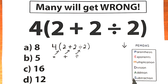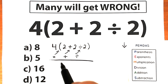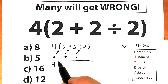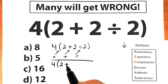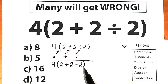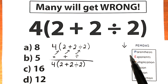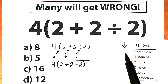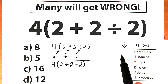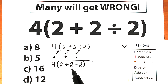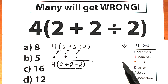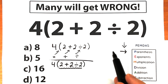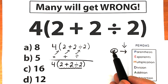Parentheses have the highest priority — we should always evaluate the expression inside parentheses first, then exponents, then multiplication and division, and the last step is addition and subtraction. Now let's solve this challenge according to PEMDAS. We have 4, and inside the parenthesis we have 2 plus 2 divided by 2. We scan from the top, and first we look for parentheses — and yes, we have parentheses here.